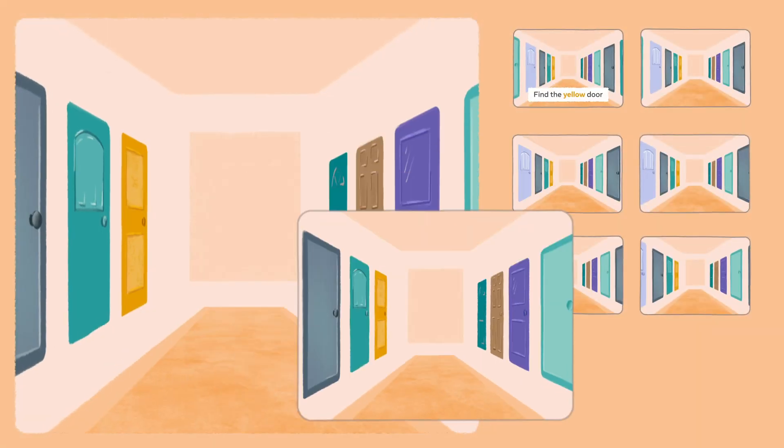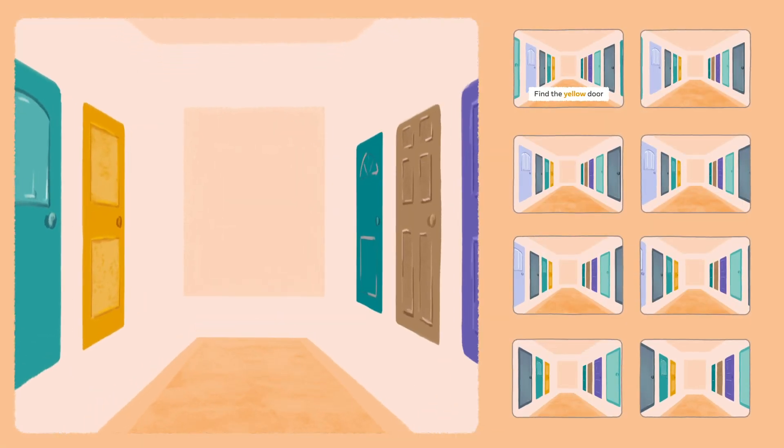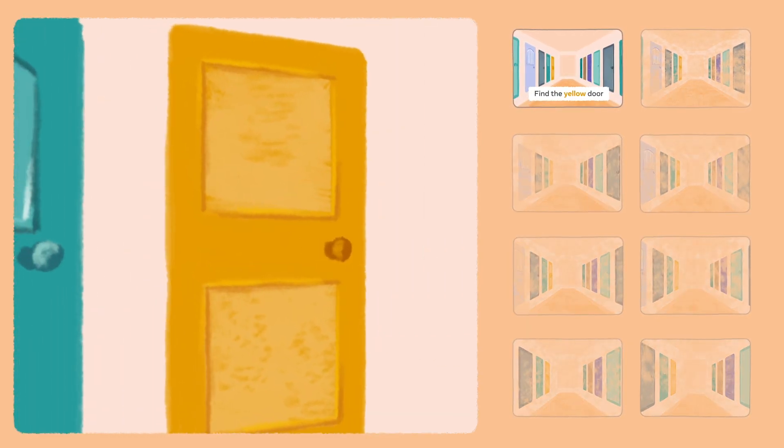With Expirespan, the model prioritizes only the relevant information needed to complete the task. In this case, the color of the doors and forgets the rest of the unnecessary details.